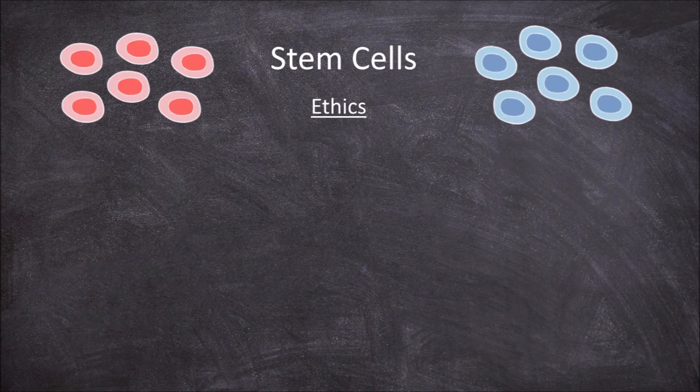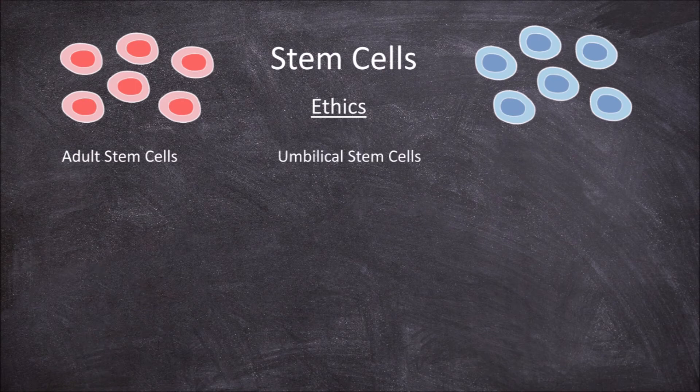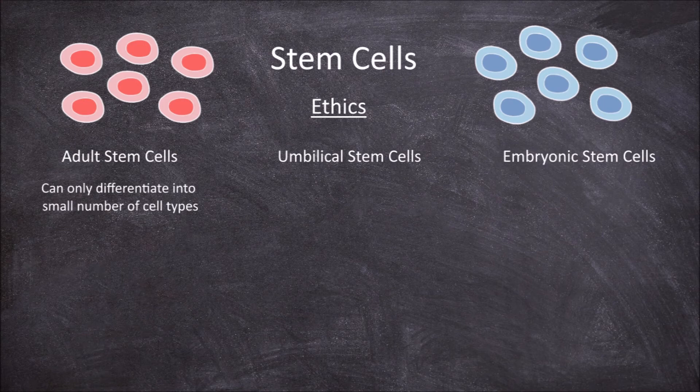There are ethical considerations associated with using stem cells, and these vary depending on the source of the stem cell. Stem cells can be derived from specific adult tissue such as from the bone marrow, from umbilical cord blood of a newborn baby, and from embryos. Multipotent adult stem cells are effective for certain conditions, but because they can only differentiate into limited types of cells, they are limited in what they can be used to treat. They are also limited because they are not common and hard to obtain from adult tissue.